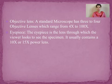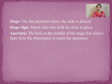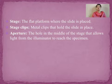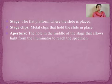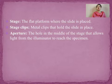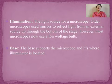The stage is a flat platform where the slide is placed. Stage clips are metal clips used to hold the slide in a proper position so the slides don't move. The aperture is a hole in the middle of the stage — you must have seen the black stage with a hole in the middle — which allows the light of the illuminator to reach the specimen, or through which light reflected by the mirror reaches the object.